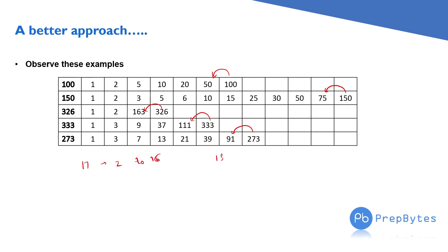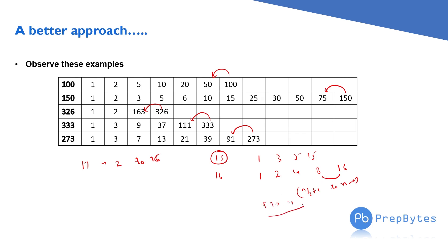For 15, the factors are 1, 3, 5, and 15. For 16, the factors are 1, 2, 4, 8, and 16. There is no factor between 8 and 16 — that is, from n/2 + 1 to n − 1, there are no factors. So we are wasting time checking whether those numbers can divide 16.